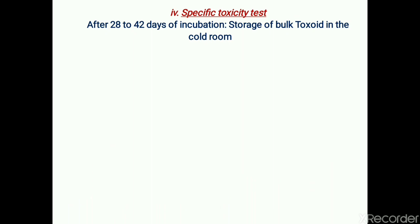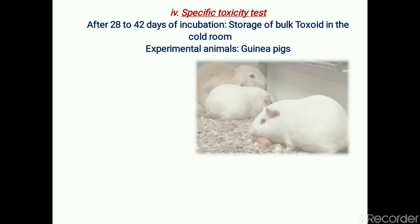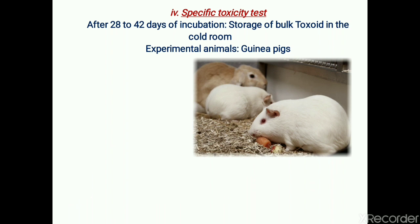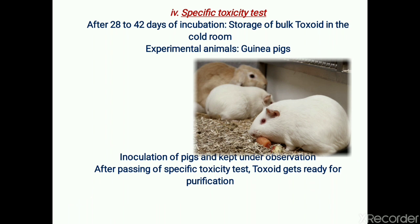The next step is the specific toxicity test, in which the suitability of the formed toxoid for inoculation into human or animal bodies is tested. It is first carried out on experimental animals. After 28 to 40 days of incubation, storage of bulk toxin is done in a cold room, and then further testing is carried out on experimental animals like guinea pigs. The preparation is inoculated into the pigs, which are kept under observation for development of any minor to lethal symptoms such as fever and irritation.